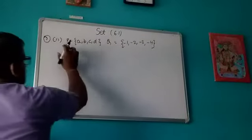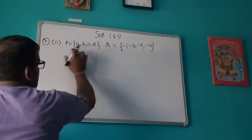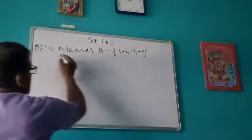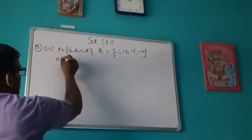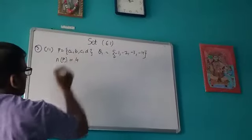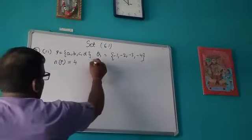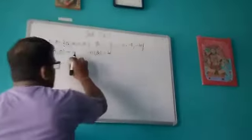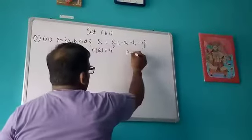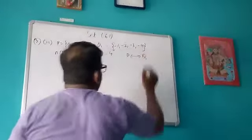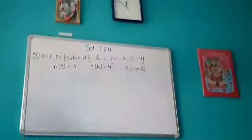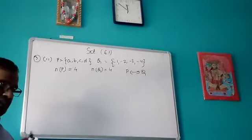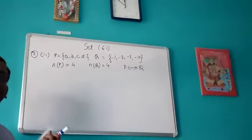Suppose P = {a, b, c, d} and Q = {-1, -2, -3, -4}. The cardinal number of P is 4 and the cardinal number of Q is also 4. Since they have the same number of elements, P is equivalent to Q. Remember: equal sets contain the same type of elements; equivalent sets contain the same number of elements.